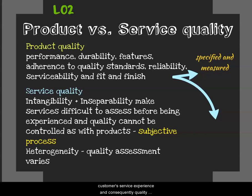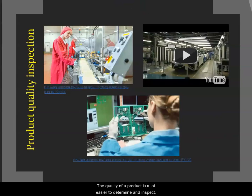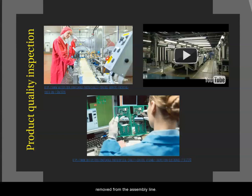The quality of a product is a lot easier to determine and inspect. Products go through the assembly line and are checked manually by workers or with computer scanning devices or laser technology, and the defective units are removed. A linked video shows exactly how Toyota inspects every inch of a car to make sure it conforms to the standards they set out.